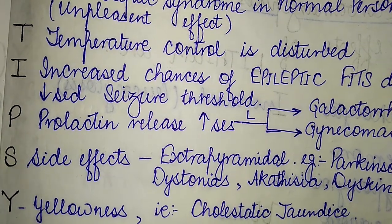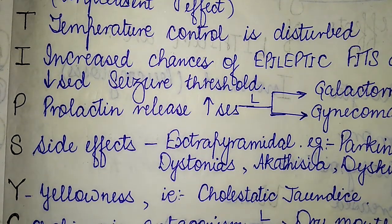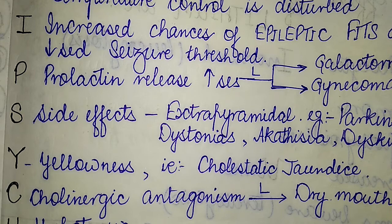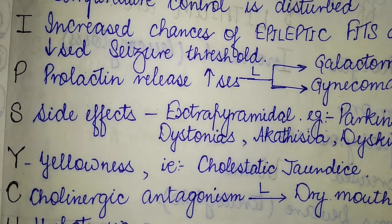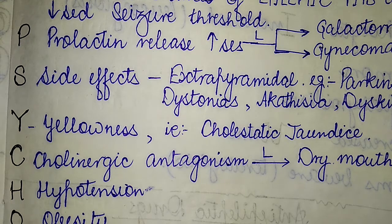The Y of anti-psychotic corresponds to yellowishness — it can cause cholestatic jaundice. The C corresponds to cholinergic antagonism, which can lead to dry mouth. The H corresponds to hypotension — patients on anti-psychotic drug therapy may experience hypotension.